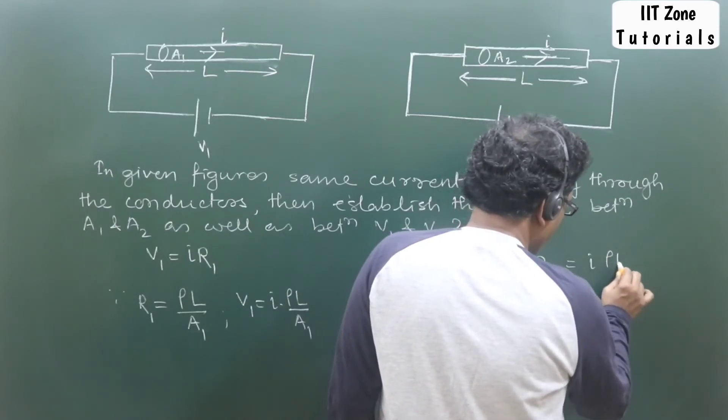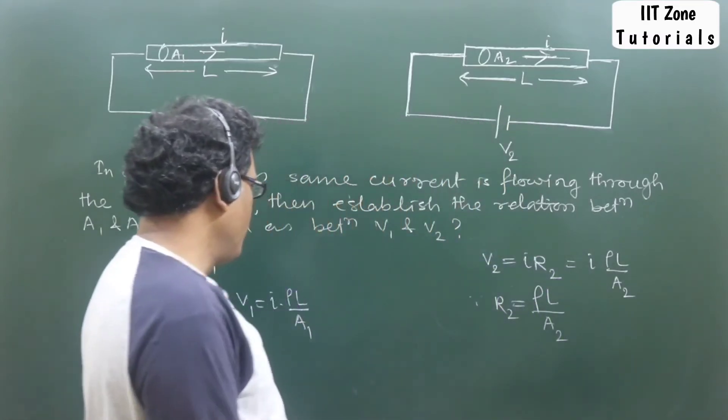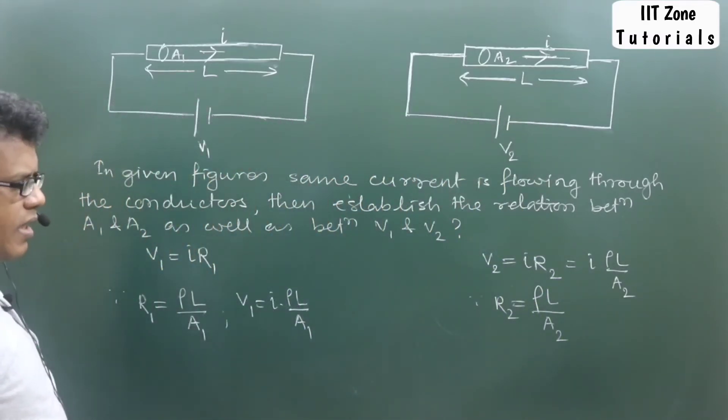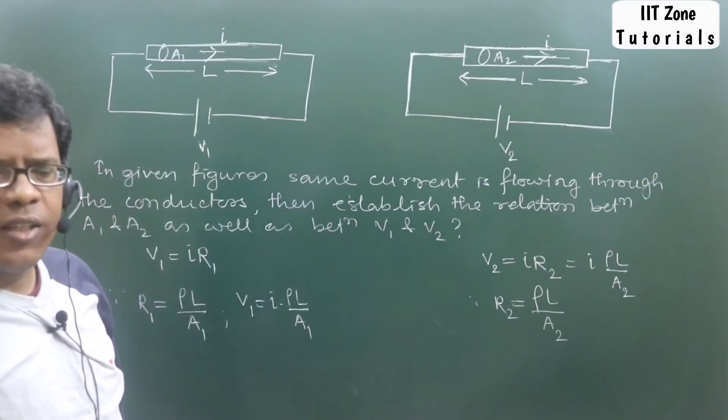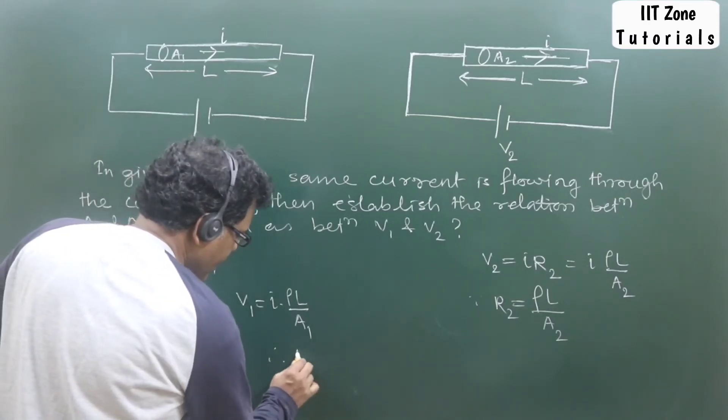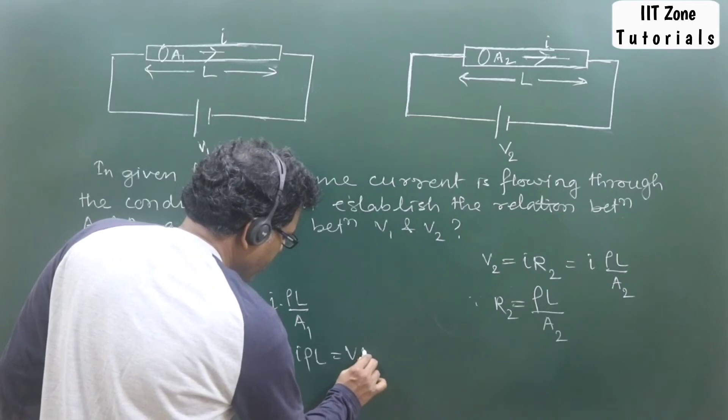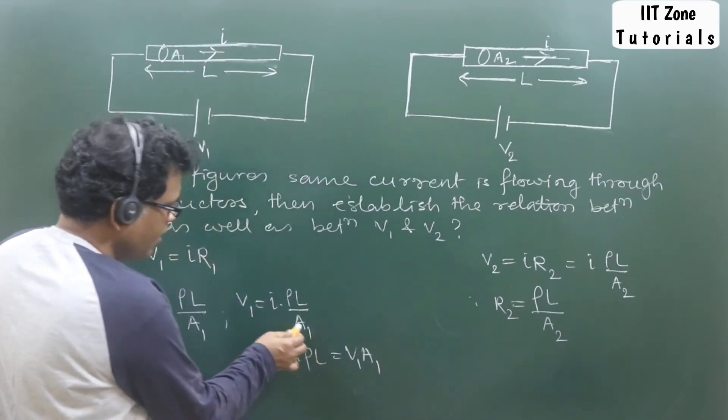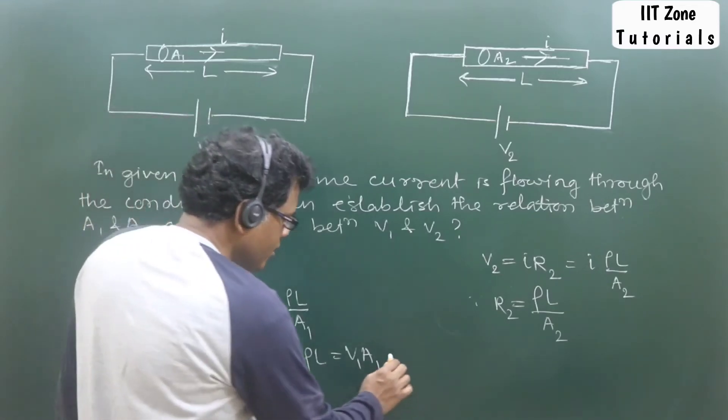Which one is common in both the conductors? That is I, ρ, L. In both the equations I can say I·ρ·L remain same. So therefore, can I write down I into ρL that is equal to V1·A1? If I do the cross-multiplication, it is V1 into A1. So that same will be in the second equation, V2·A2.